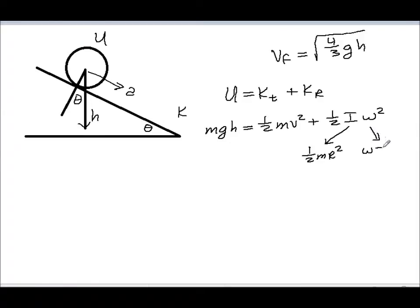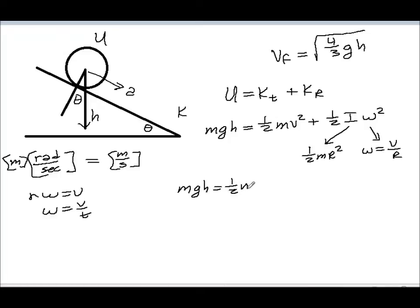Omega equals v over r. This is just radians per second, and this is meters per second divided by meters, which is just per second. So r times omega equals v, or omega equals v over r. Now let's put all of this together. We get mgh equals one-half mv squared, which is the velocity at the bottom of the ramp, plus one-half times our moment of inertia for a disk around its center of mass, one-half mr squared, times v squared over r squared. And what do we notice again? The r's cancel, and the m's cancel. The mass doesn't matter.